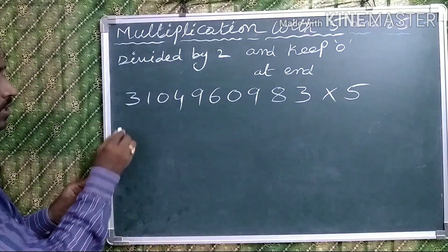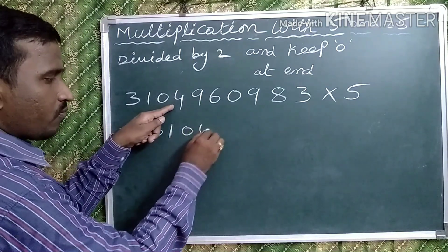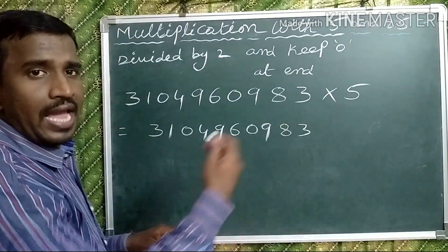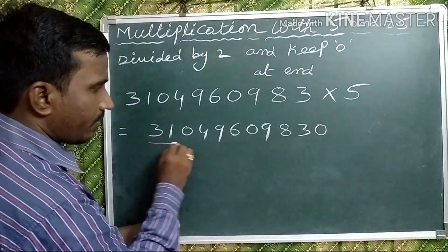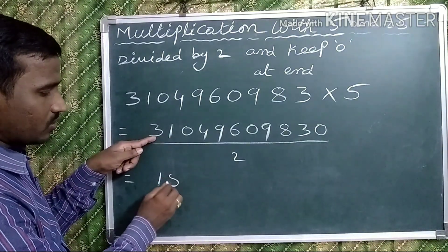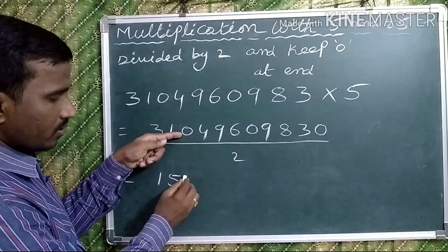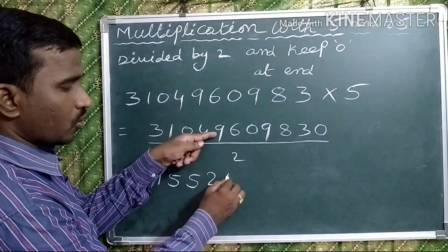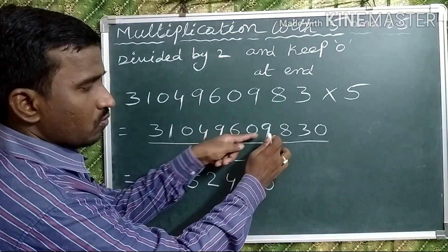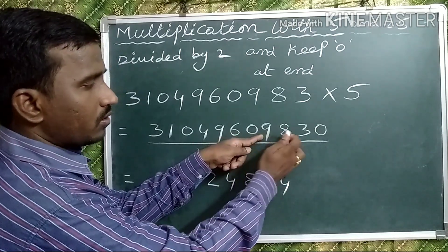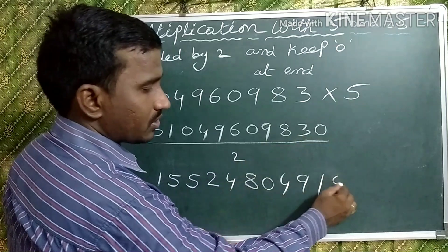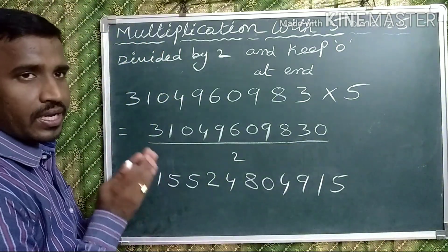Observe one more example: 3104960983 multiplied by 5. Add 0 at the end and divide by 2. 1 two is 2; carry 1, then 11; 5 twos are 10; carry 1, then 10; 5 twos are 10; 2 twos are 4; 4 twos are 8; carry 1, then 16; 8 twos are 0; write 0; 4 twos are 8; 4 twos are 8; carry 1, then 18; 9 twos are 18; 1 two is 2; carry 1, then 10; 5 twos are 10. That is multiplication with 5.